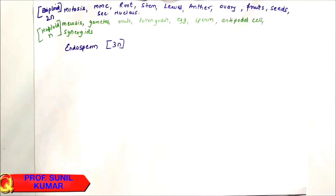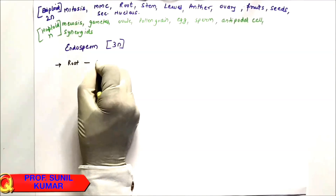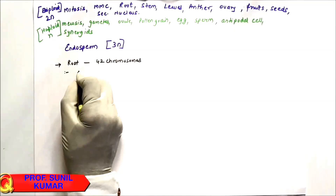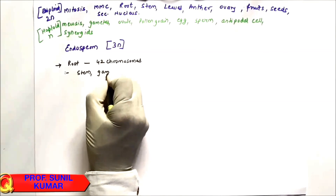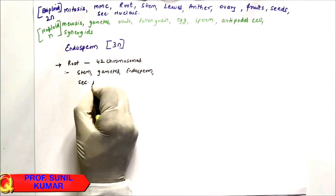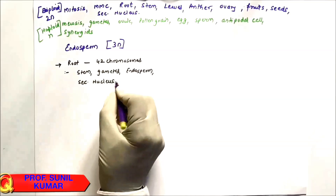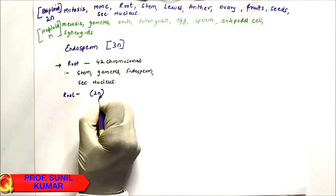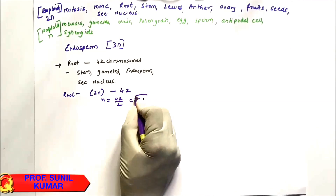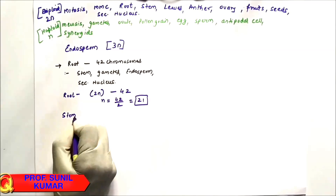Example: Root has 42 chromosomes. Find the chromosome number of stem, gametes, endosperm, and secondary nucleus. Root is 2n = 42, so n = 42 ÷ 2 = 21. Once we have n, everything follows. Stem is 2n = 2 × 21 = 42 chromosomes.